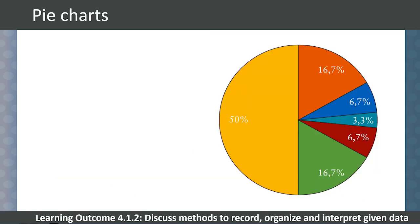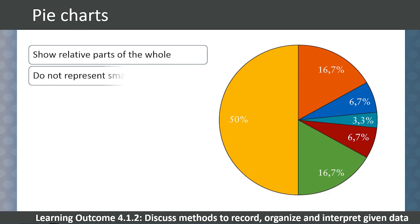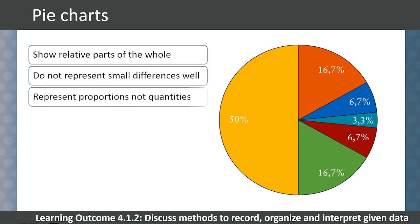Pie charts are useful when we want to show the relative parts of the whole. They do not represent small differences well, and they do not represent actual quantities, only proportions.